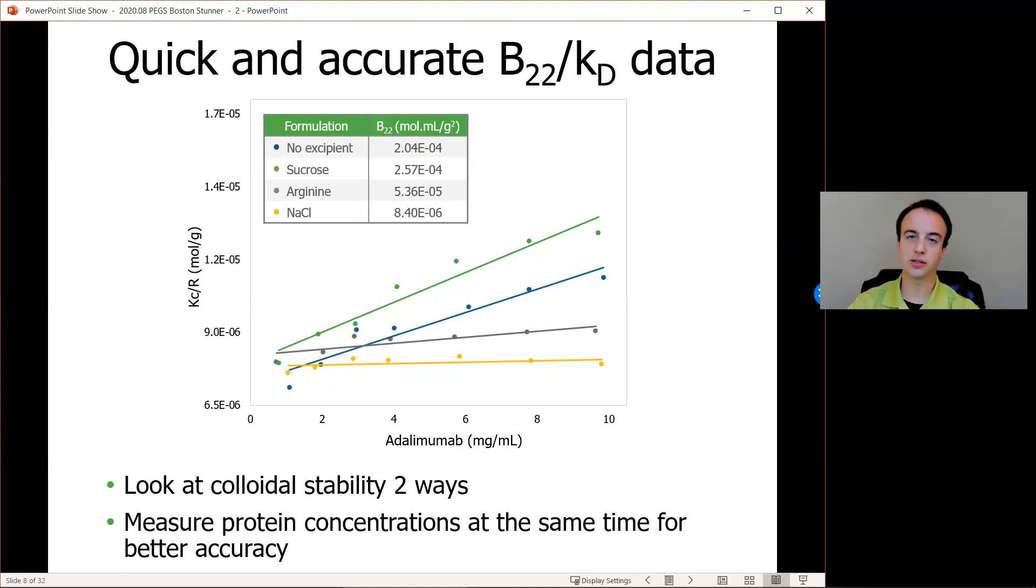If you see increasing slopes like are shown here with sucrose and no excipient formulations for this protein, then you have repulsive protein-protein interactions, and that's great news. If you have flat or negative slopes like are shown here for arginine and sodium chloride with this protein, then that means you either have neutral or attractive protein-protein interactions. Those are formulation of protein combinations that you should watch out for since they're probably susceptible to aggregation.